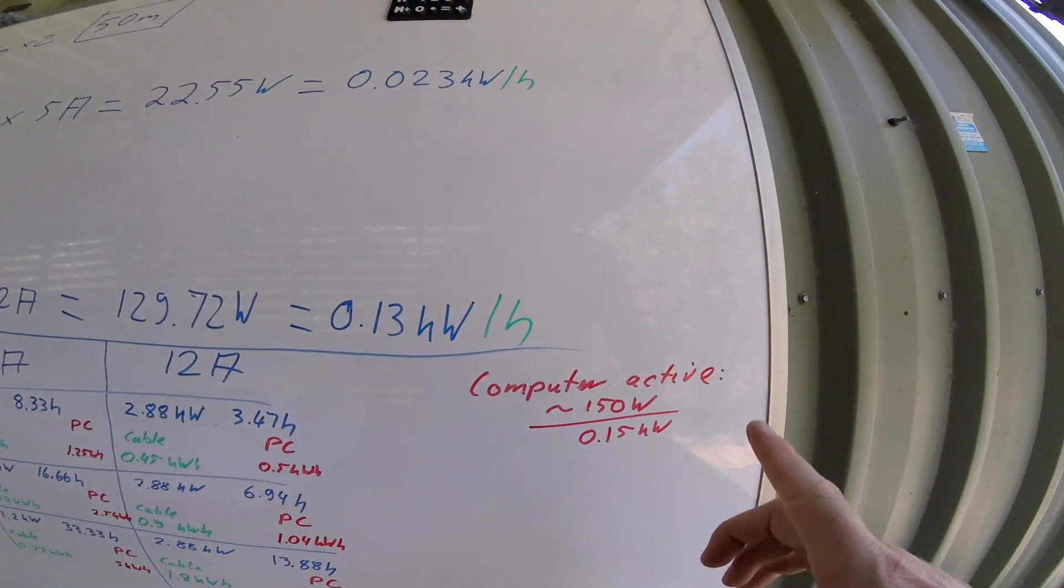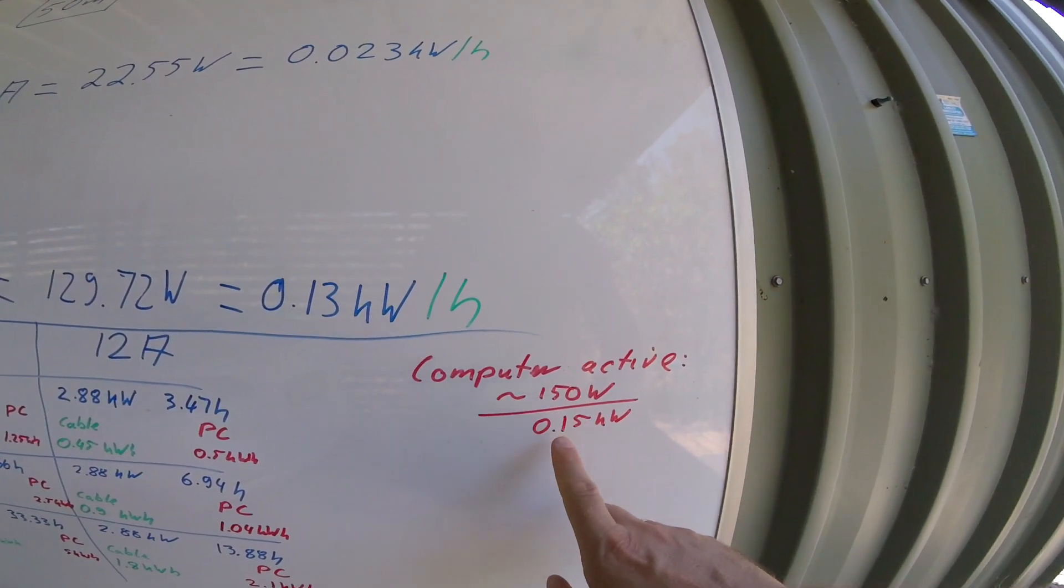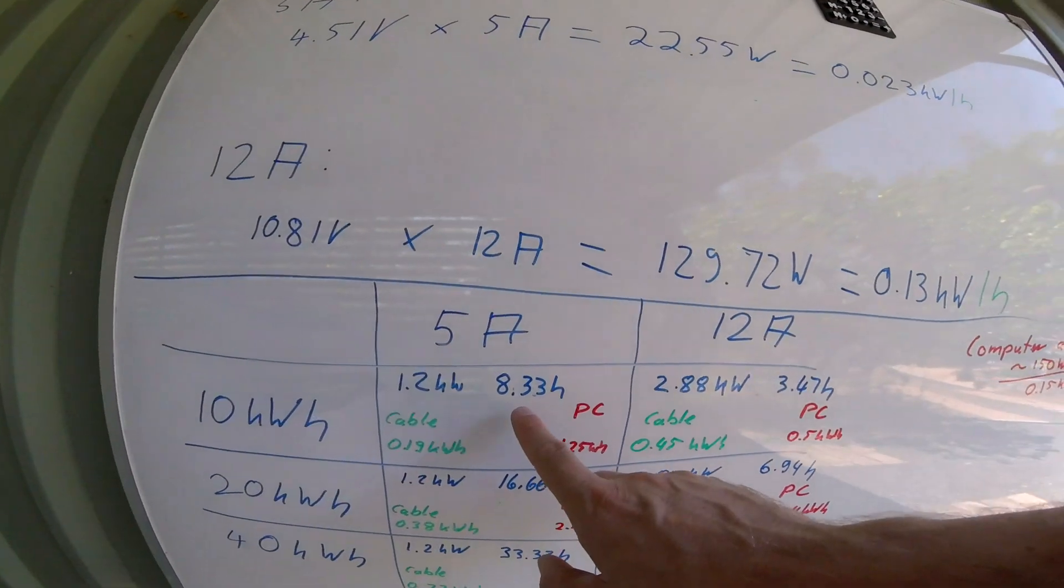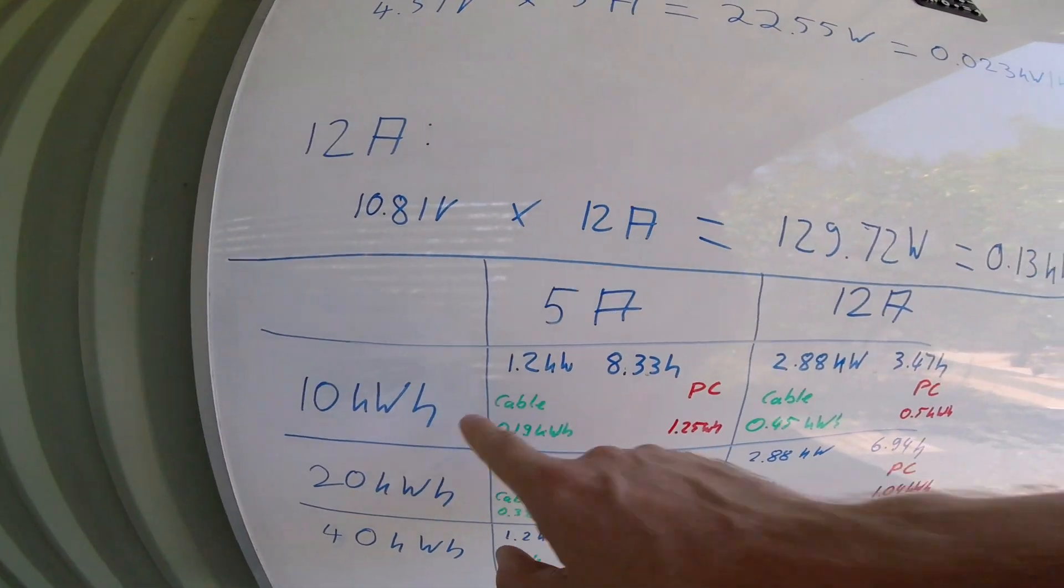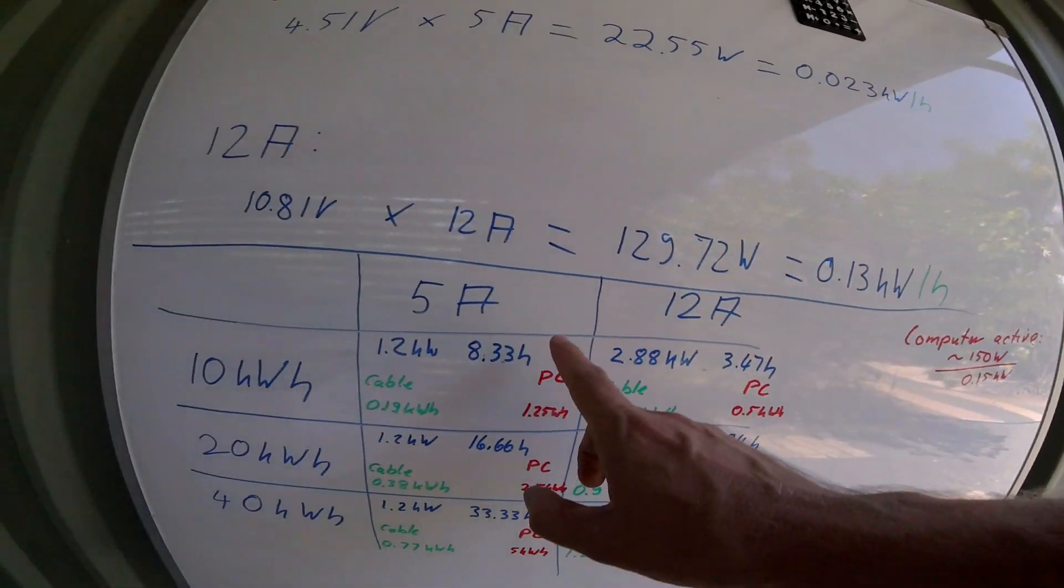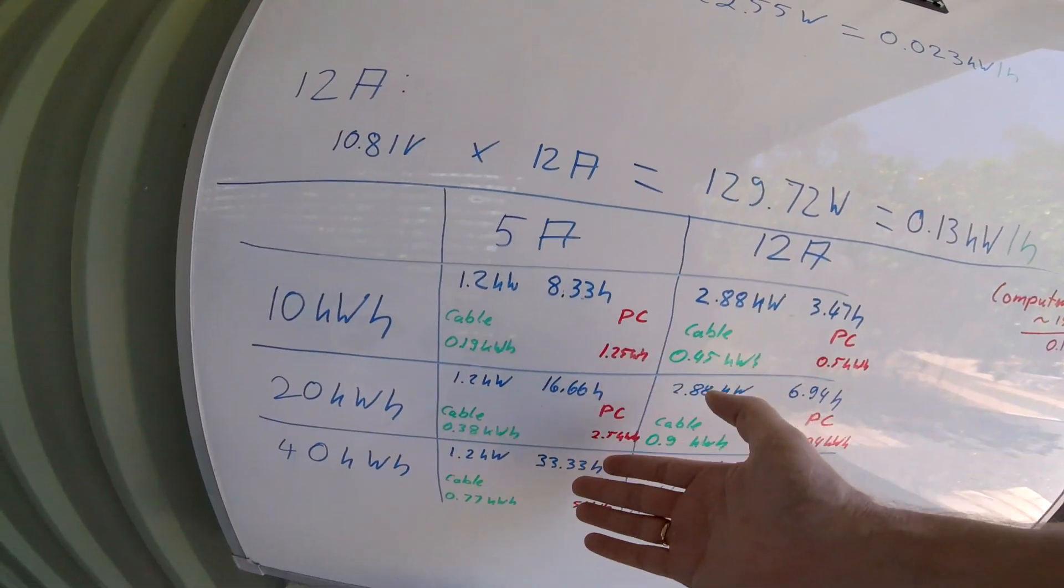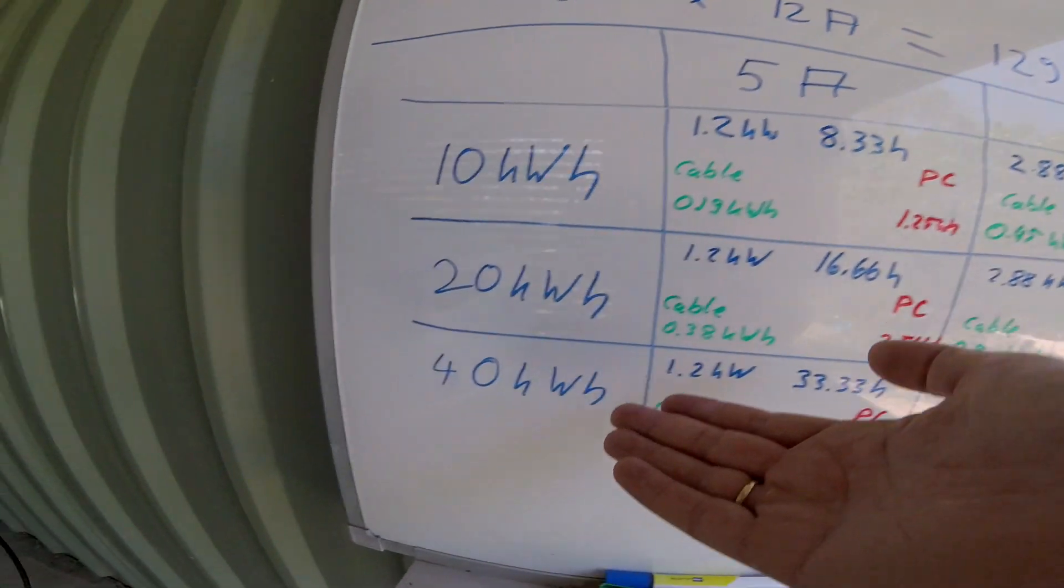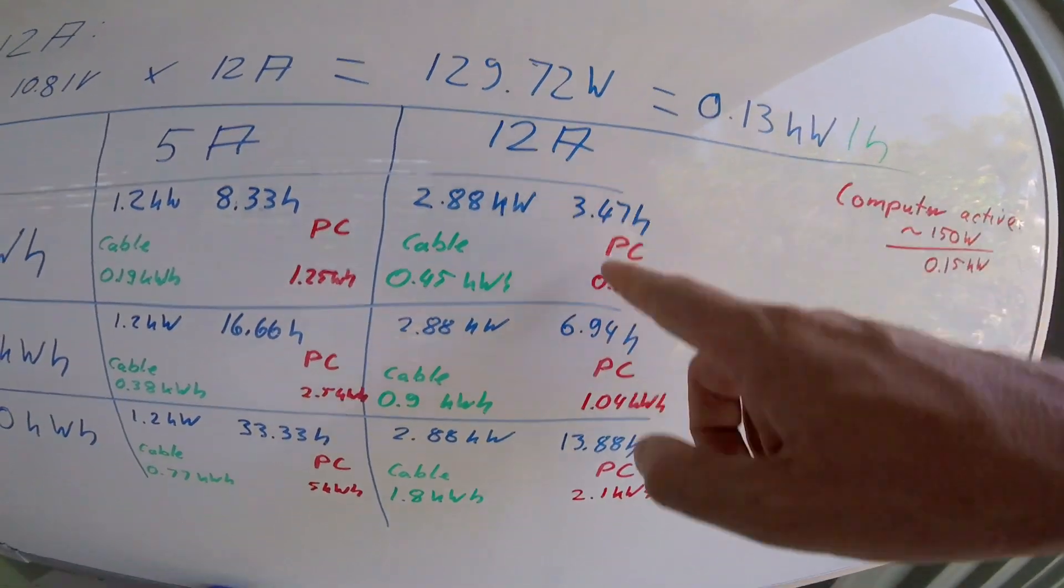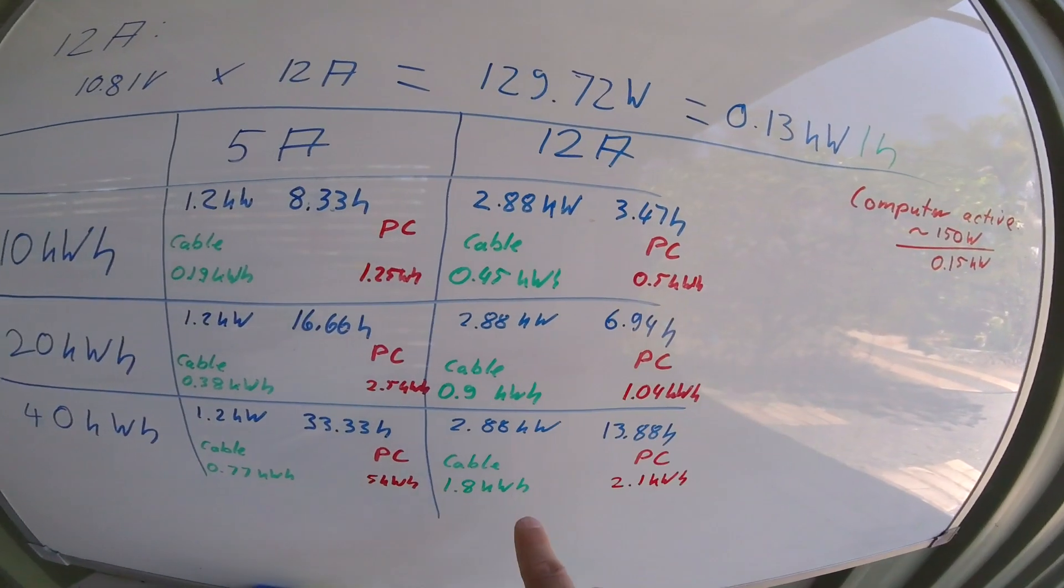And now we are having a look at the computer losses we have. So 150 watts we assume, it's 150 watt, I think it's more 170 watts, but let's go with 150 watts. 0.15 kilowatt per hour of charging times the 8 hours it takes to charge 10 kilowatt hours on 5 amp, we will have 1.25 kilowatt hours loss just to operate the computer. So the longer I charge, the more loss I have, of course, and this is the disadvantage of 5 amp setting. Because it takes 33 hours here to charge 40 kilowatt hours, and we will lose 5 kilowatt hours in this time period. While on the 12 amp setting we will lose only 2.1 kilowatt hours for the computer. It charges faster, this is time related, not cable related.